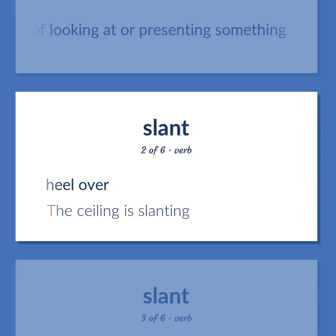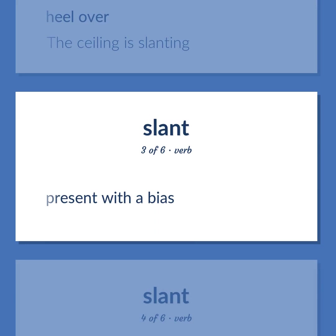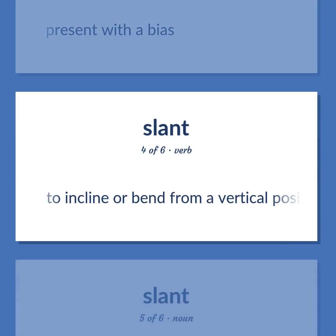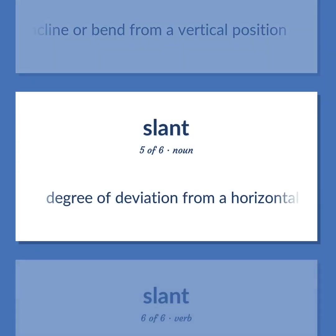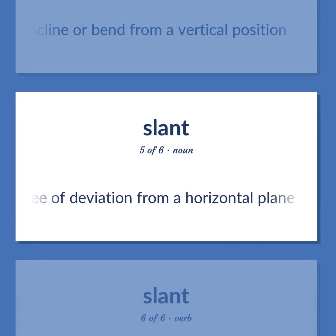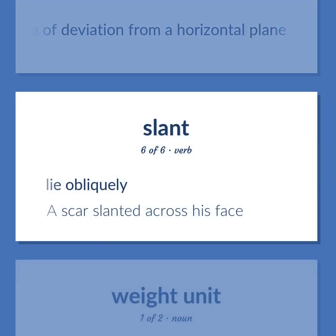Slant: To heel over. Example: The ceiling is slanting. To present with a bias. To incline or bend from a vertical position. Degree of deviation from a horizontal plane. To lie obliquely — a scar slanted across his face.